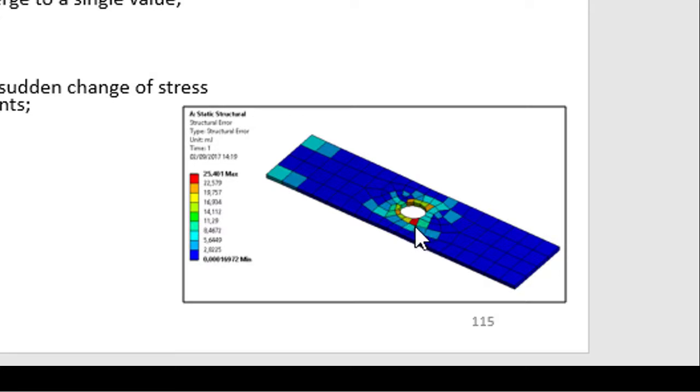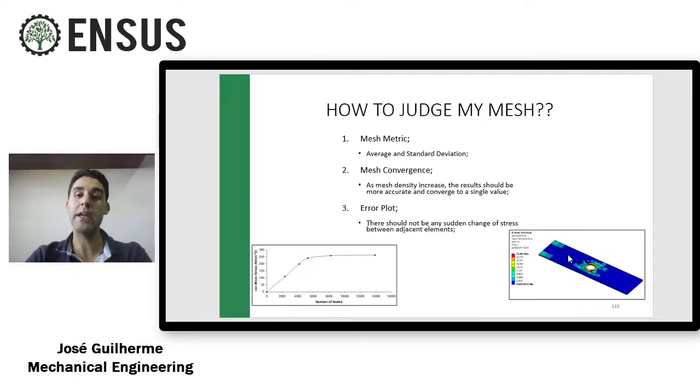This red element says that the result of stresses I have here in this element is the most different result that I have from the neighbor element in this analysis. So when I have a big difference between one element and another one, that gives me an idea that I have to refine my mesh, because I cannot have an abrupt change.